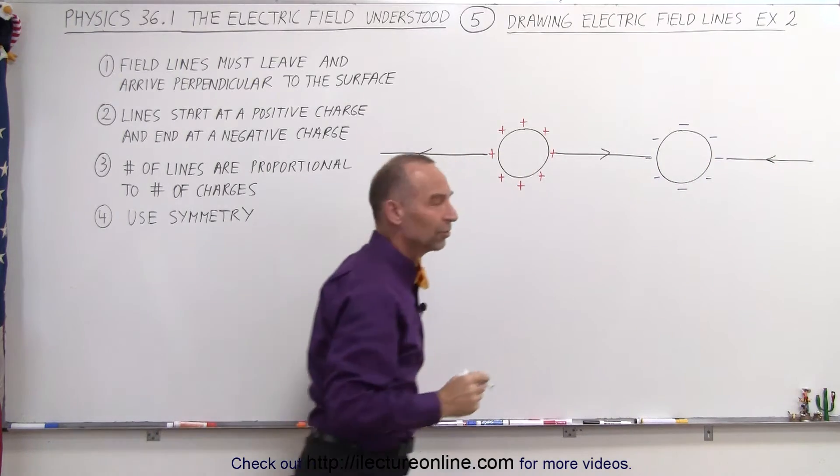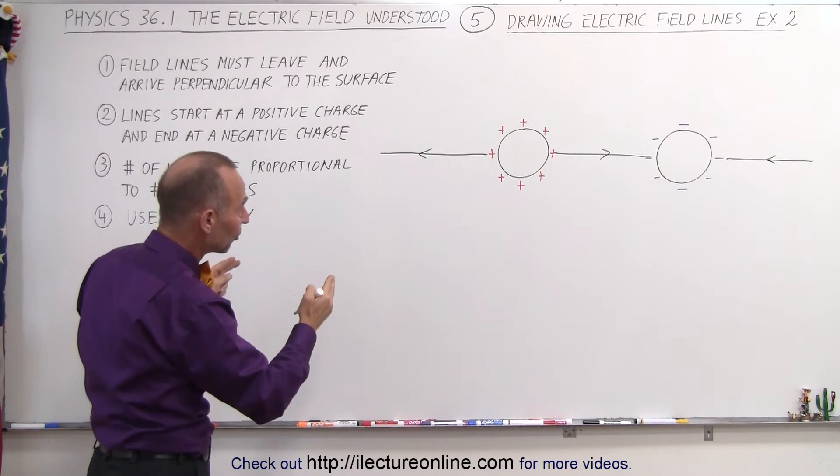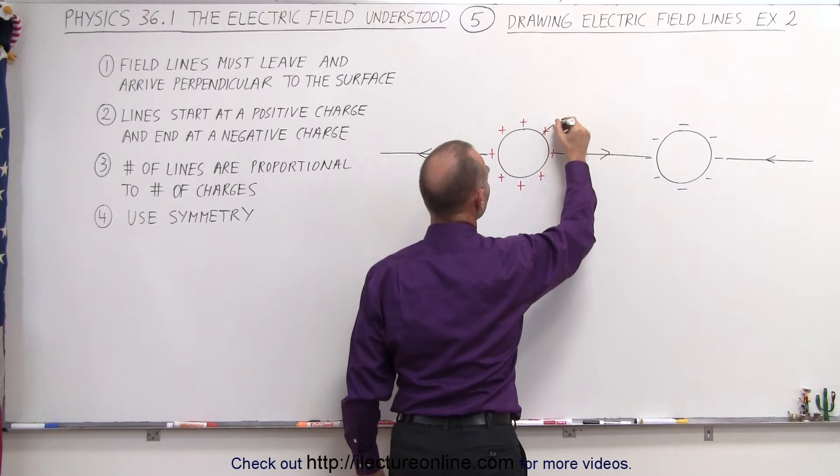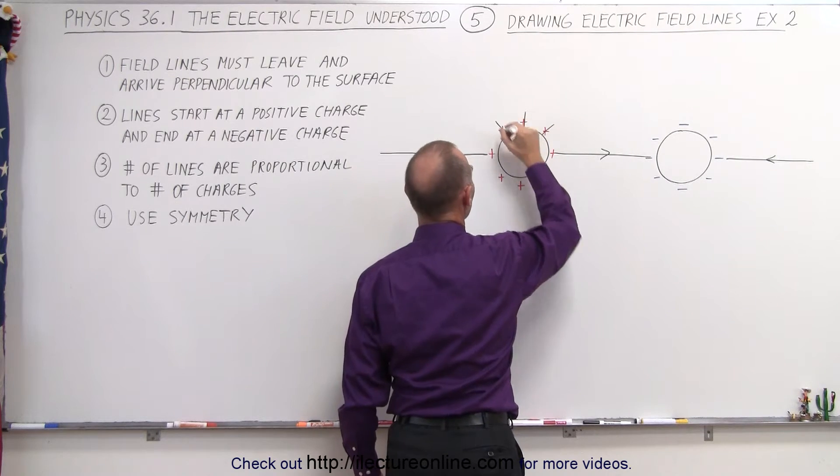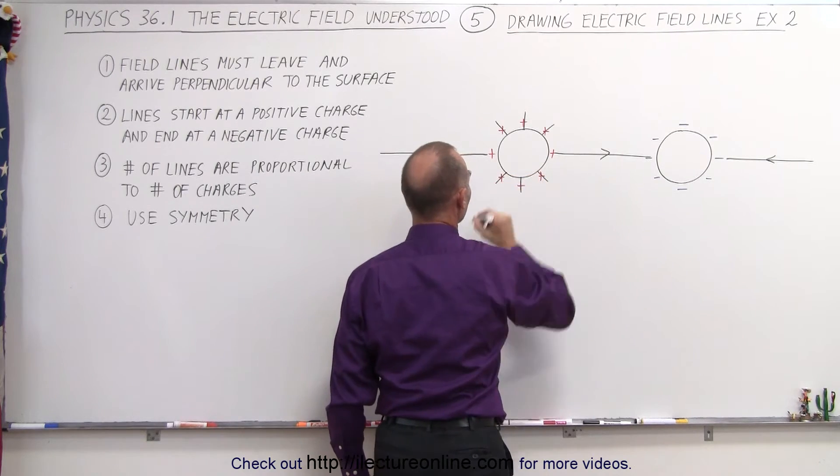But what about the others? Well, as long as we adhere to the rules where the lines must leave and enter perpendicular to the surface, that means we'll have a line leaving like this, a line leaving like this, and a line leaving like that, and on the other side, because of symmetry, exactly the same, like so.